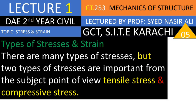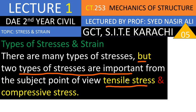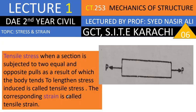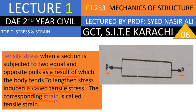Now we will talk about the types of stresses and strain. There are many types of stresses, but two types are important from the subject's point of view: number one is tensile stress, and number two is compressive stress. Tensile stress occurs when a section is subjected to two equal and opposite forces — pulls — acting away from each other, as you can see here. As a result, the body tends to lengthen — that is, increase in length. The stress induced is called tensile stress, and the corresponding strain is called tensile strain.